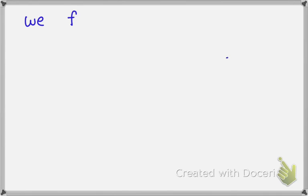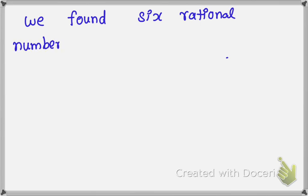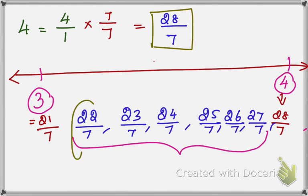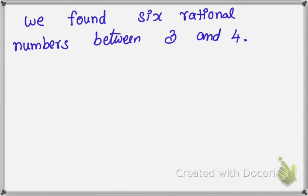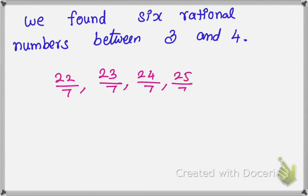Therefore, we found 6 rational numbers between 3 and 4. The answer is: 22 by 7, 23 by 7, 24 by 7, 25 by 7, 26 by 7, and 27 by 7. So we found 6 rational numbers in between 3 and 4 using this method.